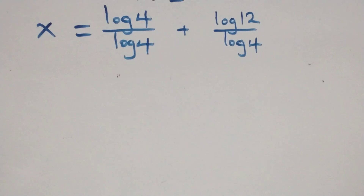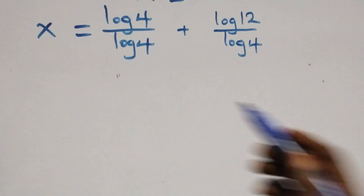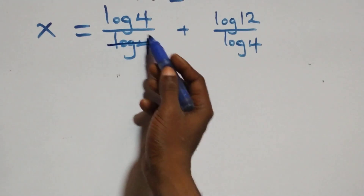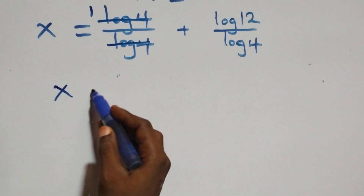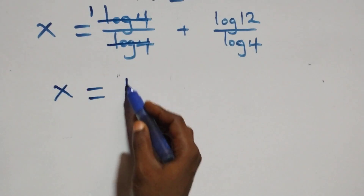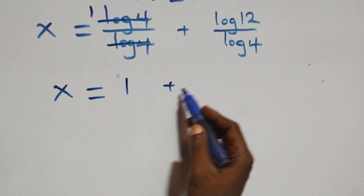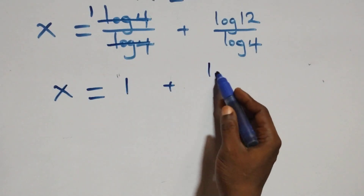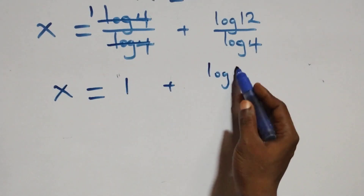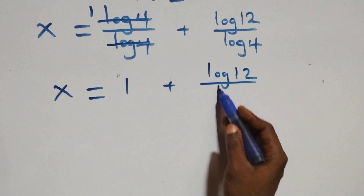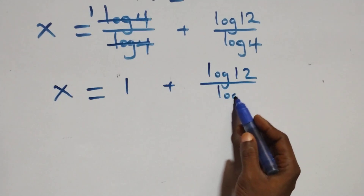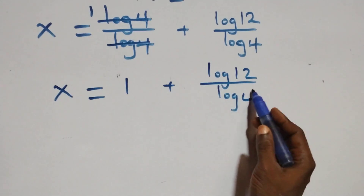Then, next step here, log 4 cancels each other and we have one left here. That is, x equals to 1 plus log 12 over log 4.